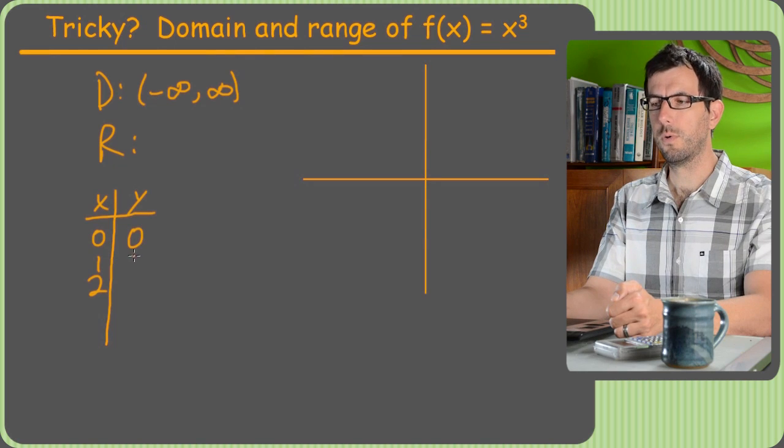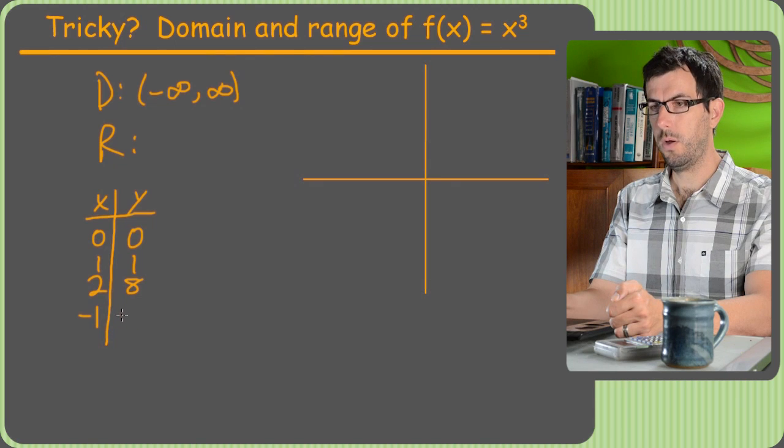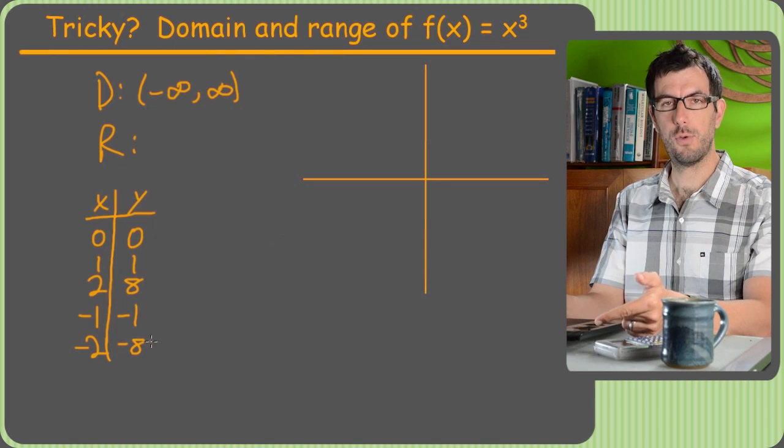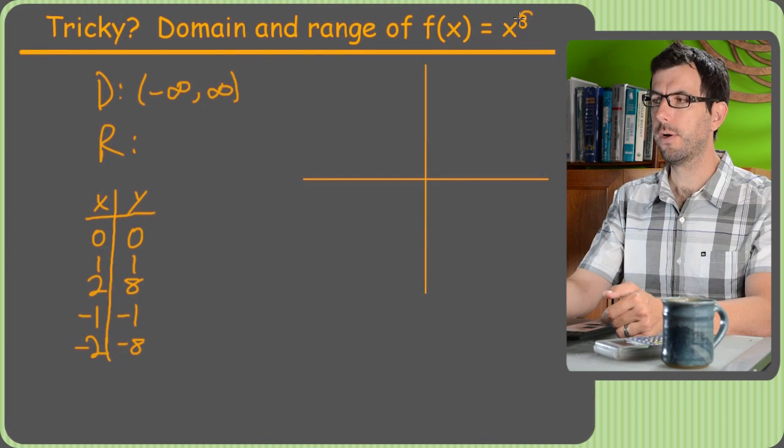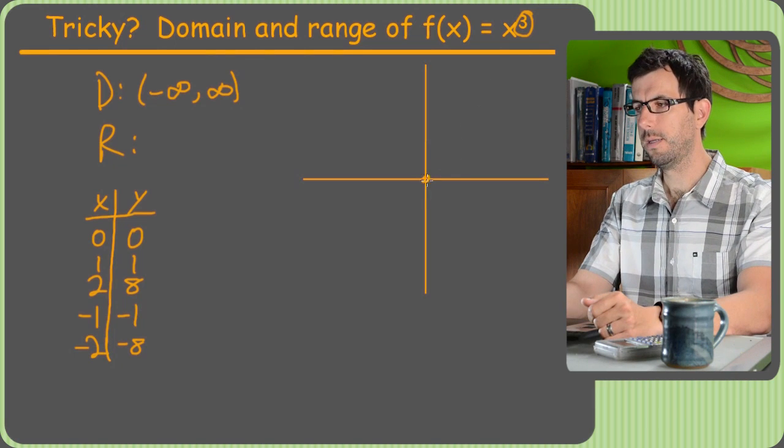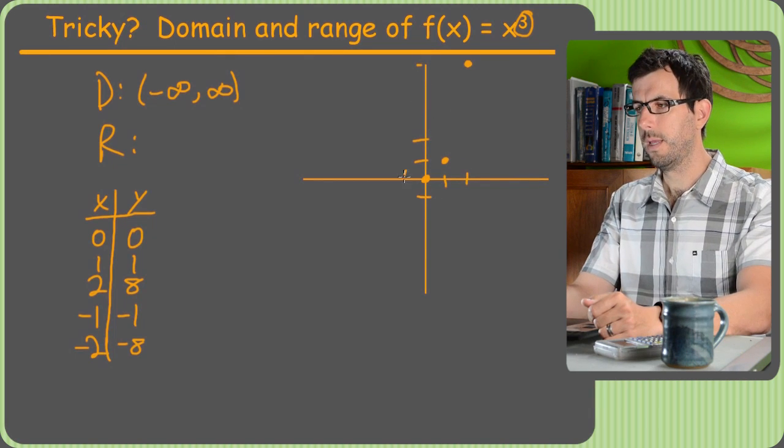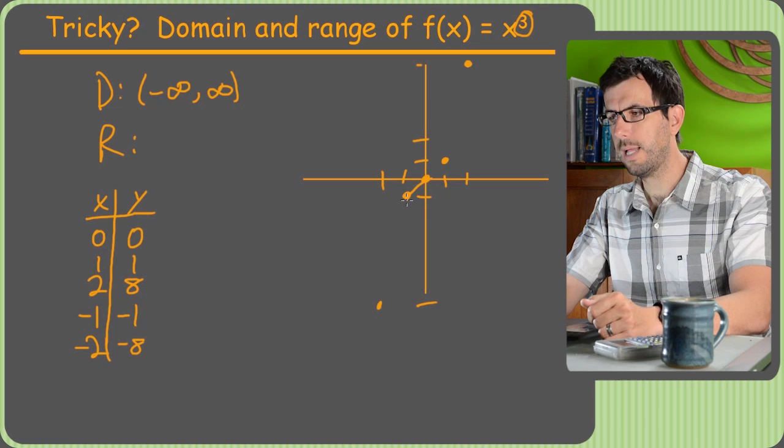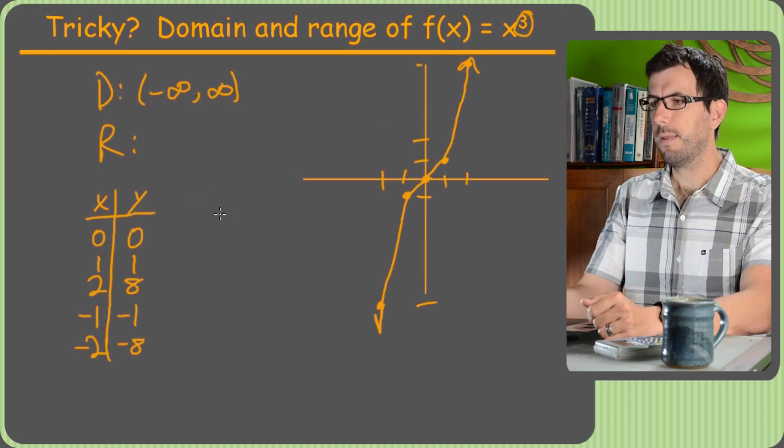So plug in 0, 1, 2. I get 0 cubed is 0, 1 cubed is 1, 2 cubed is 8. Try some negative ones. Negative 1 cubed is negative 1. Negative 2 cubed is negative 8. Because negative 2 times negative 2 would be positive 4, but then positive 4 times negative 2 is negative 8. So when you have an odd power, that makes your negative numbers stay negative. So if we graph these, we get something like this. What we've got here is your classic x cubed graph. It will be classic to you eventually.